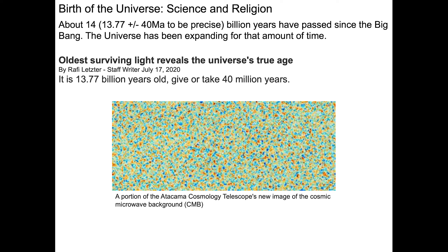About 13.77 billion years ago, plus or minus 40 million years, the universe went through the Big Bang. The universe has been expanding since that time. In an article from this summer, we can see that astronomers have used the oldest surviving light — light left over from near the beginning of the universe — to place an age on the universe and refine our estimate of how old it is.